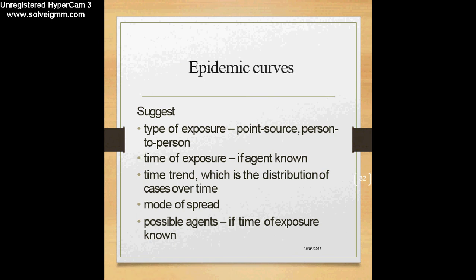Why do we need to plot these epidemic curves? Epidemic curves are very important because they can suggest the type of exposure — whether it is a point source or a person-to-person propagated type. They can also show us the time of exposure, the time trend — distribution of cases over time — the mode of spread, whether by respiratory route or blood-borne spread, and possible agents if we know the time of exposure.